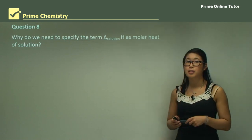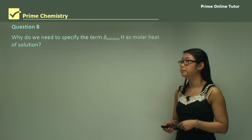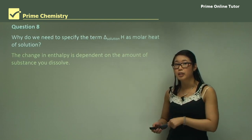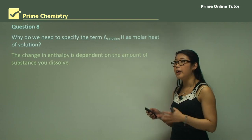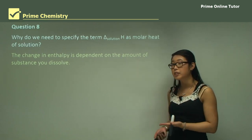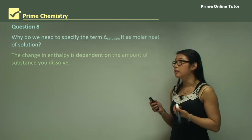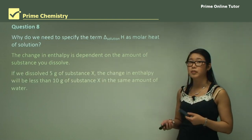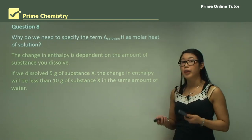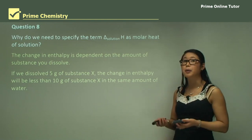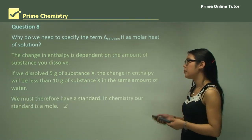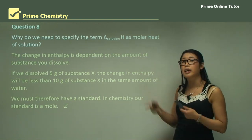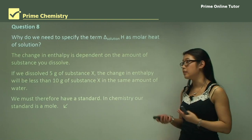Question eight: why do we need to specify delta solution H as the molar heat of solution? The change in enthalpy depends on the amount of substance dissolved. For example, in acid-base neutralization with HCl it was a one-to-one ratio giving -57 kJ, but if two moles of base were required the delta H had to change accordingly. If we dissolve 5 grams versus 10 grams of substance X, the enthalpy change differs, so we must use the mole as our standard.